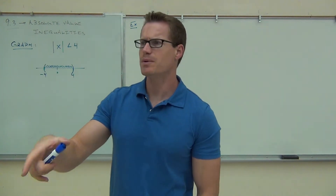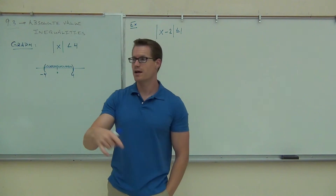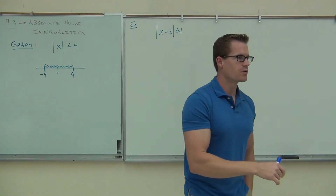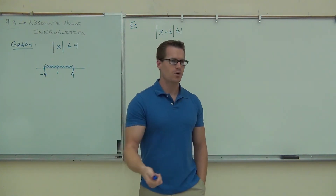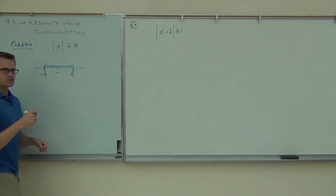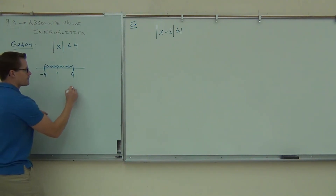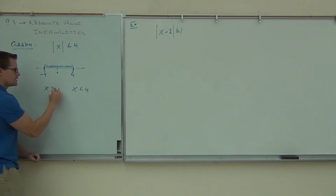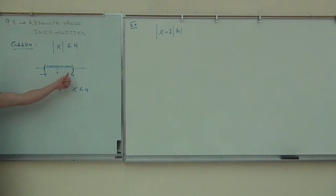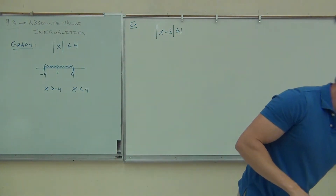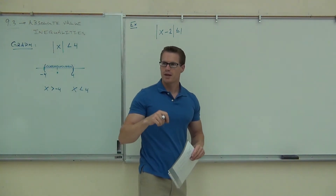When we first started dealing with absolute value equations, you always get two equations. Well, if we get two equations with absolute value equations, then when we're dealing with absolute value inequalities, we should get two inequalities. Notice how we could have written out two inequalities for this problem: x had to be less than positive four, and x had to be greater than negative four. We make up two inequalities, so absolute value inequalities will also have two.